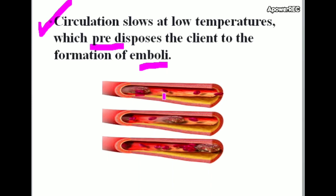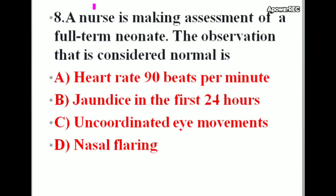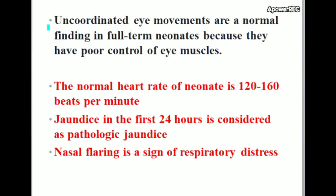Next question: The nurse is making an assessment of a full-term neonate. The observation that is considered normal is — options: heart rate 90 beats per minute, jaundice in the first 24 hours, uncoordinated eye movements, nasal flaring. Correct answer is uncoordinated eye movements. Uncoordinated eye movements are a normal finding in full-term neonates because they have poor control of eye muscles.